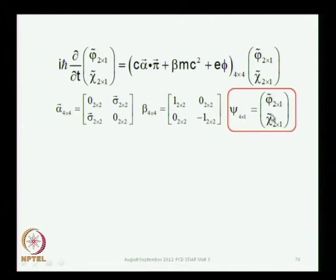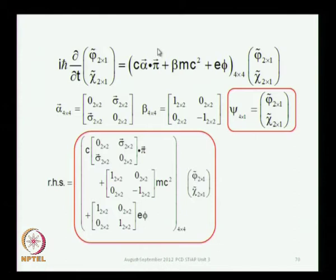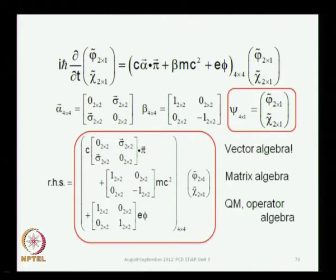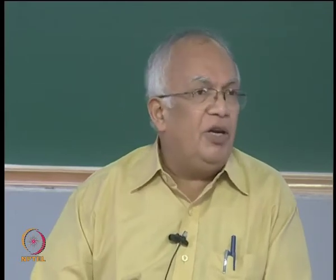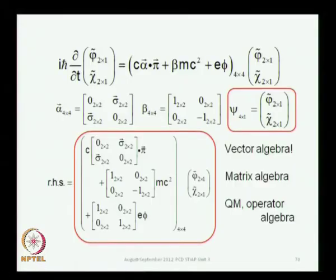These four components I have written as phi-tilde and chi-tilde. Phi-tilde has two components and chi-tilde also has two components, so together it is a four-component wave function. Alpha and beta are the Dirac matrices. You can see the four-by-four structure by explicitly writing the Dirac matrices alpha and beta. You have to use vector algebra, matrix algebra, quantum mechanics, and operator algebra all together. Sigma, for example, is not just a vector — it is a vector operator with a two-by-two matrix structure. The mathematics is very simple, but you have to use all of it together.